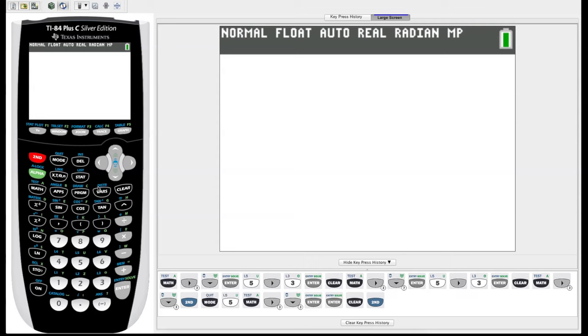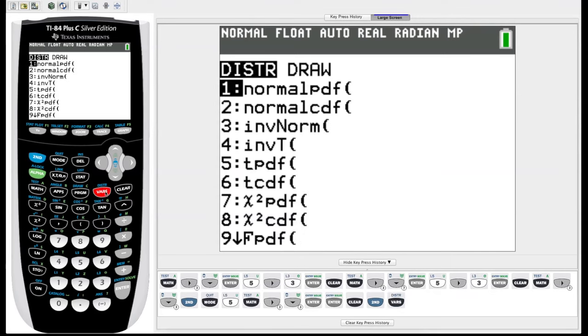Now we see a whole bunch of distribution functions. I'm going to first take you through a normal distribution. If we have a normal distribution we often have a mean and standard deviation, and we're often interested in calculating the probability of something occurring in a range of values. We're going to choose number two for normal CDF, which stands for normal cumulative distribution function.